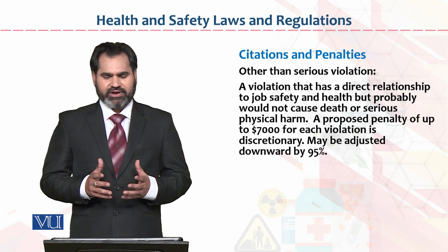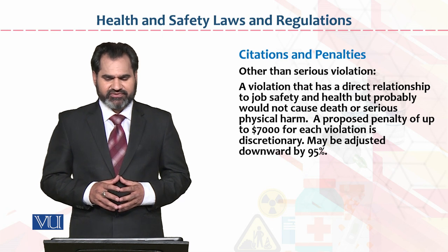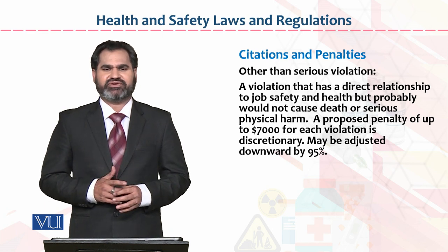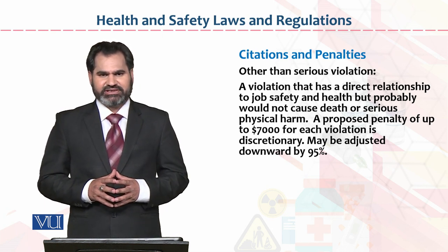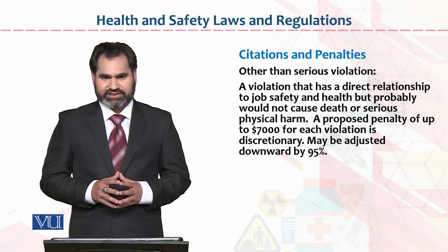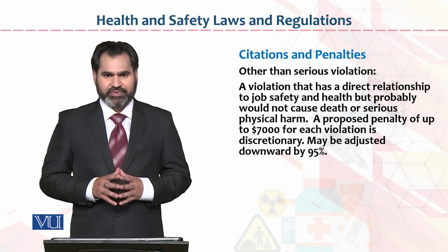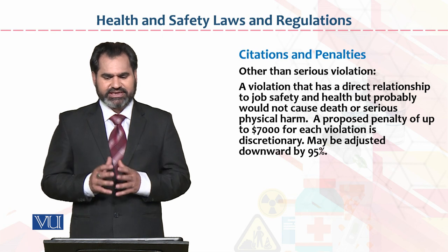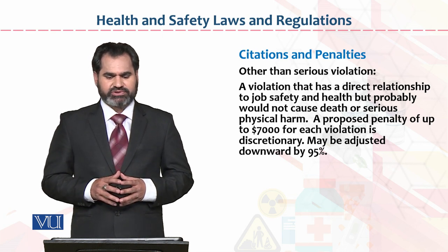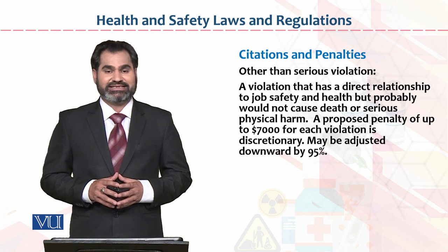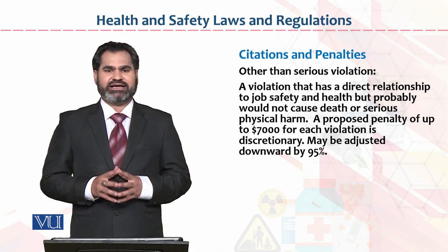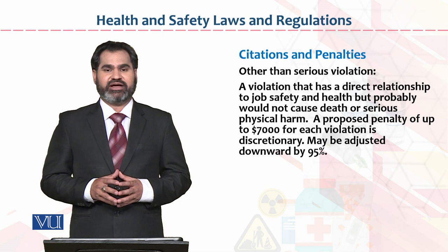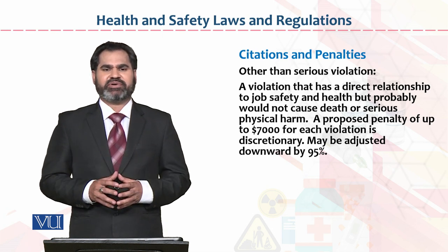Other than serious violation: a violation that has a direct relationship to job safety and health but probably would not cause death or serious injuries. Iska yeh matlab hai ki aisi violation jis ki wajah se employee ki injury ya illness nahi ho sakti, to yeh bhi serious violation nahi hoti, lekan organization ke under violations must be stopped — a violation must be controlled. A proposed penalty of up to seven thousand dollars for each violation is discretionary, jo inspection committee ke head ka right hai. May be adjusted downward by 95 percent — isko mazeed kam bhi kiya jaa sakta hai, lekan isse upper limit allowed nahi hai.